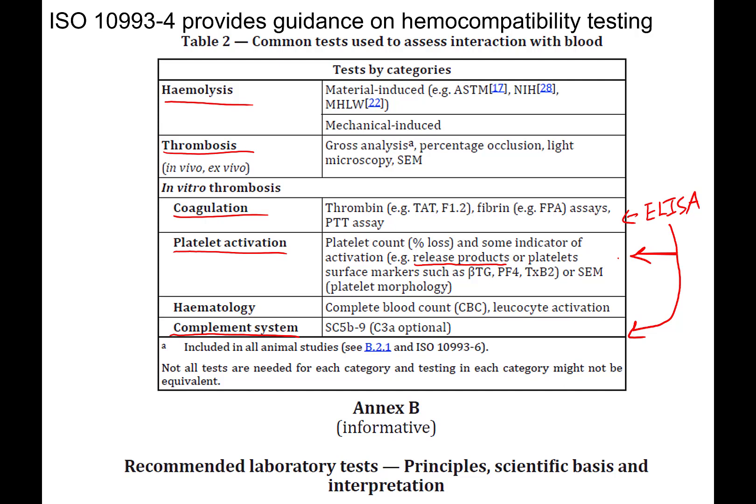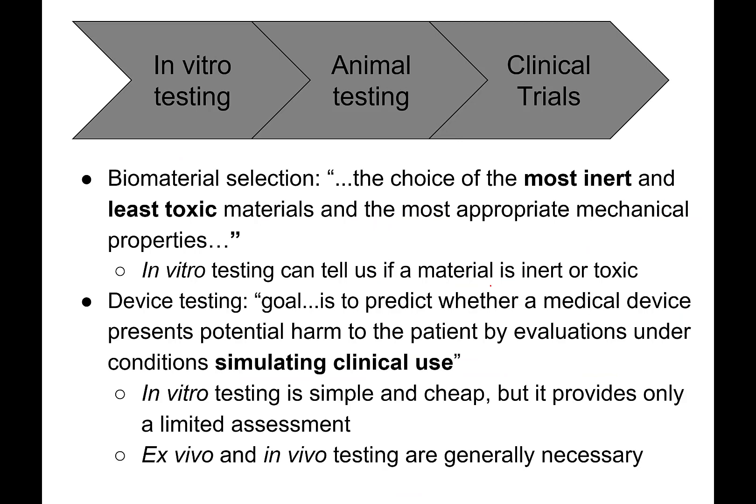We can also look at platelet morphology, because morphology changes when platelets become activated — going from that discoid shape to an irregular morphology after they contract. In the grand scheme of device development, we have a spectrum from in vitro testing to animal testing to clinical trials. Biomaterial selection has been driven by choosing the most inert and least toxic materials with appropriate mechanical properties. In vitro testing's role is to tell us if a material is inert or toxic.